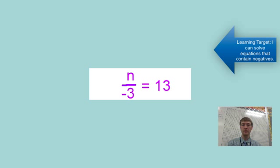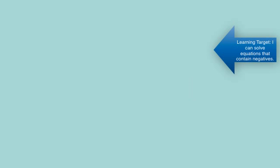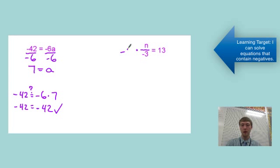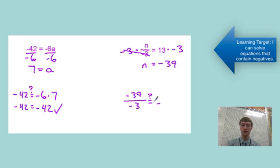Next problem: n divided by negative 3 equals 13. Go ahead and try that. We're going to multiply both sides by negative 3. 13 times negative 3—cancel out that side. 13 times negative 3: positive 13, 3 times is negative 39. Now check: negative 39 divided by negative 3. Negative divided by negative—that is positive. Notice how I'm doing the sign separate from the division. 39 divided by 3 is 13.